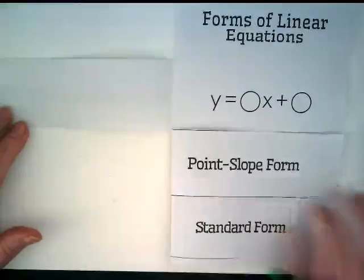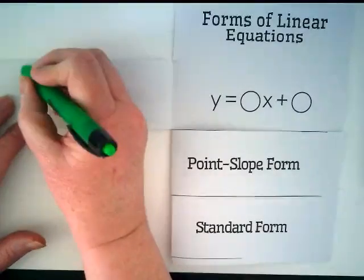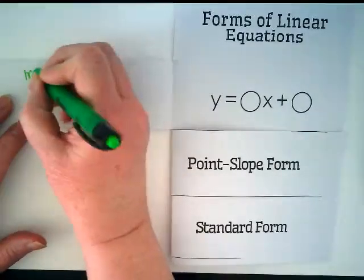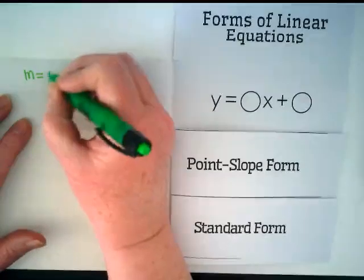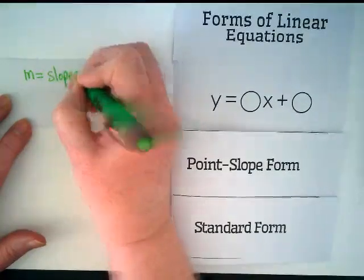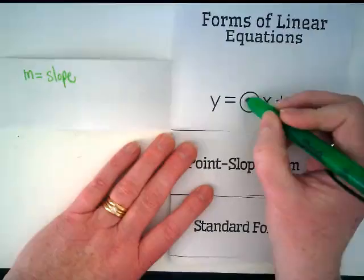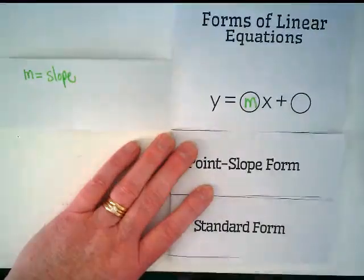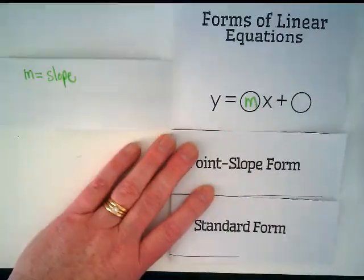I'd like you to open up your foldable, and on the left side using one color, we're going to put that the variable for slope is m. And this is where it goes in the equation: y equals mx.